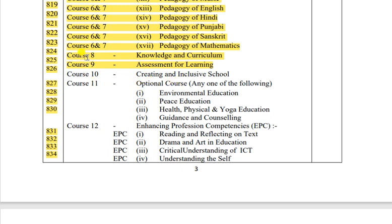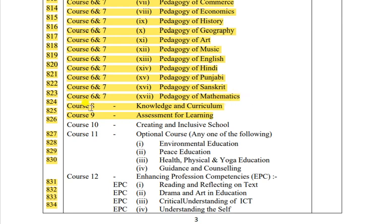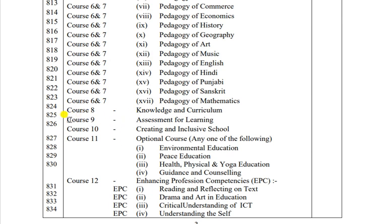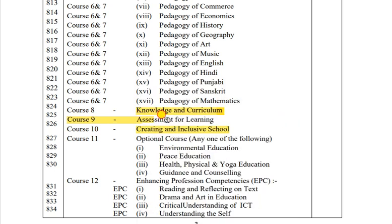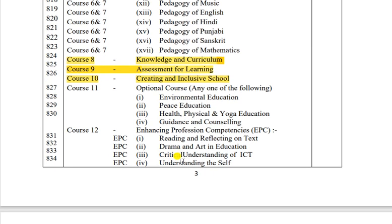Ab second year ko dekhte hain. Second year ki subjects course 8 se shuru hain. Knowledge in Curriculum aapka first subject hai, then Assessment for Learning, then Creating an Inclusive School - yeh aapke second year ke subjects hain. Optional course ki baat karein toh option mein aapke paas 4 subjects hain.